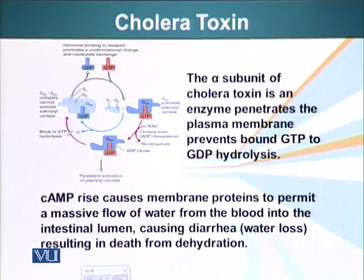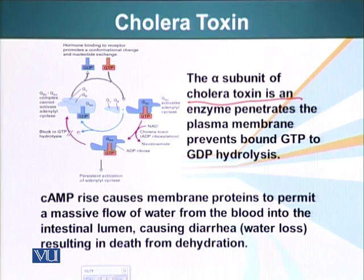Another point is that the G-protein system is manipulated by some pathogens. For example, the alpha subunit of cholera toxin is an enzyme that can penetrate the plasma membrane and prevent GTP bound to the G-protein from undergoing hydrolysis — preventing G-proteins from hydrolyzing their GTP into GDP.